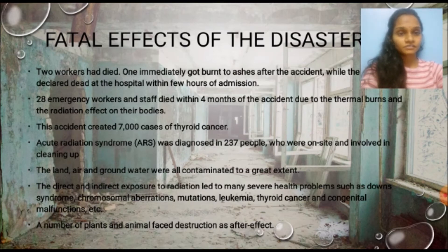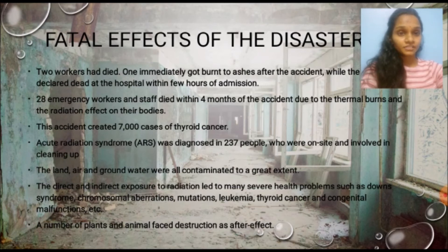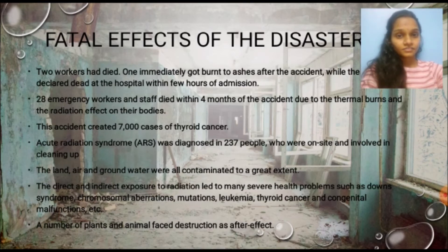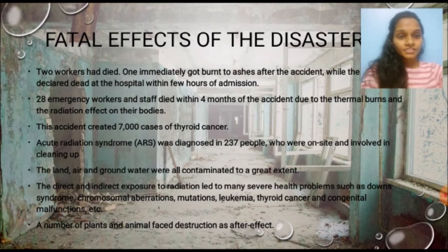This accident created 7,000 cases of thyroid cancer. Acute Radiation Syndrome (ARS) was diagnosed in 237 people who were on site and involved in the cleanup, affecting their genetics and impacting upcoming generations as well. The land, air, and groundwater were all contaminated to a great extent, causing severe pollution due to radiation. Direct and indirect exposure to radiation led to many severe health problems such as mutations, leukemia, thyroid cancer, and destruction of plants and animals in the area.